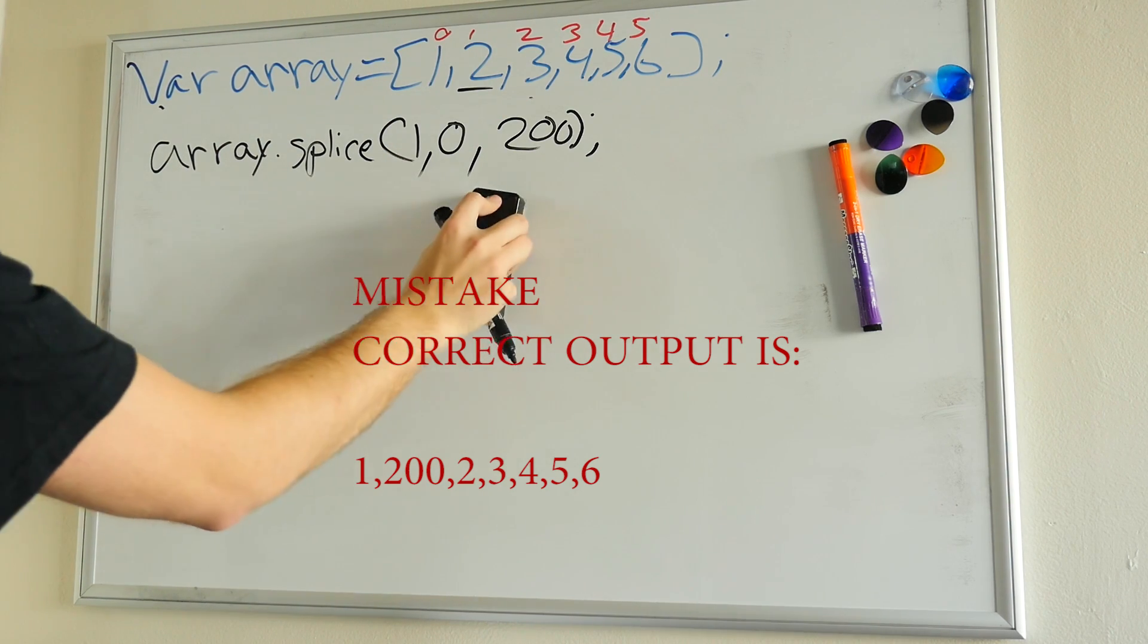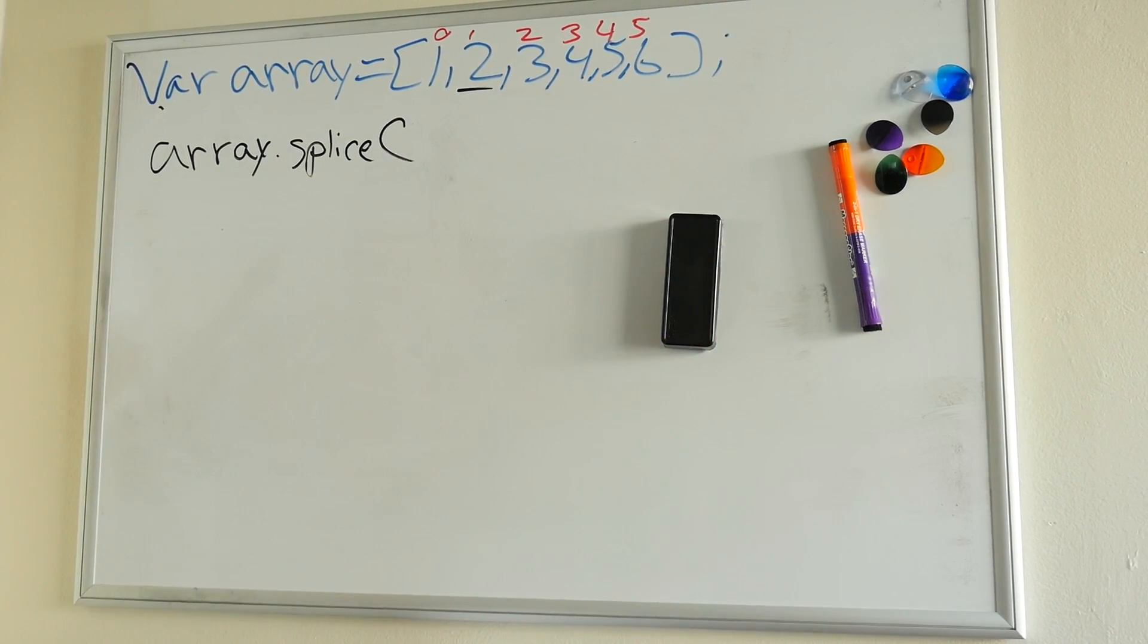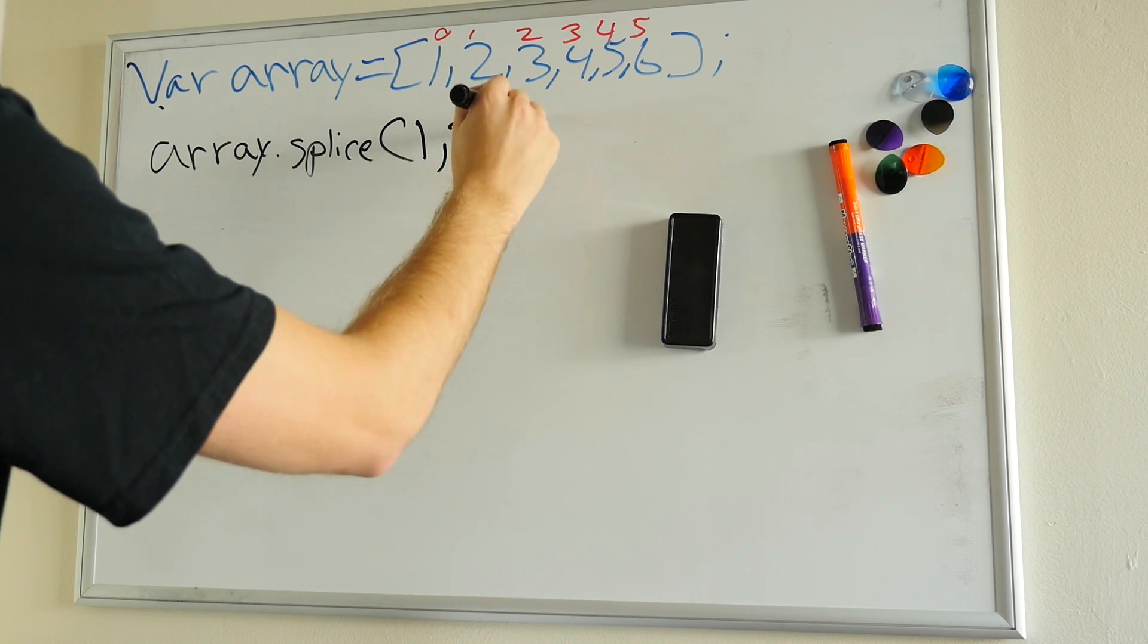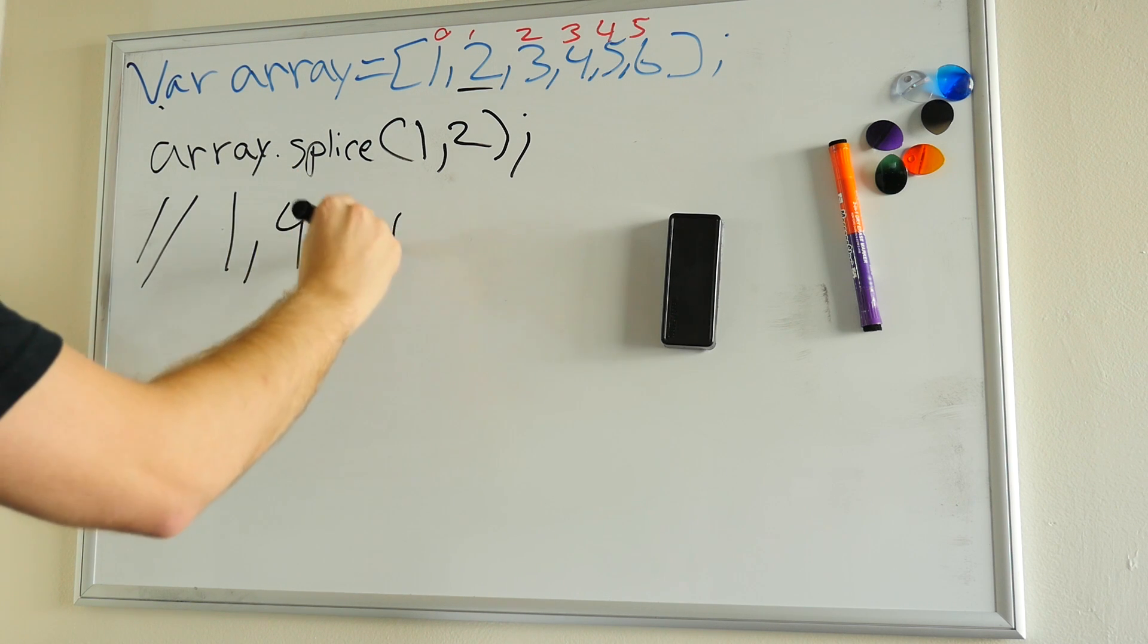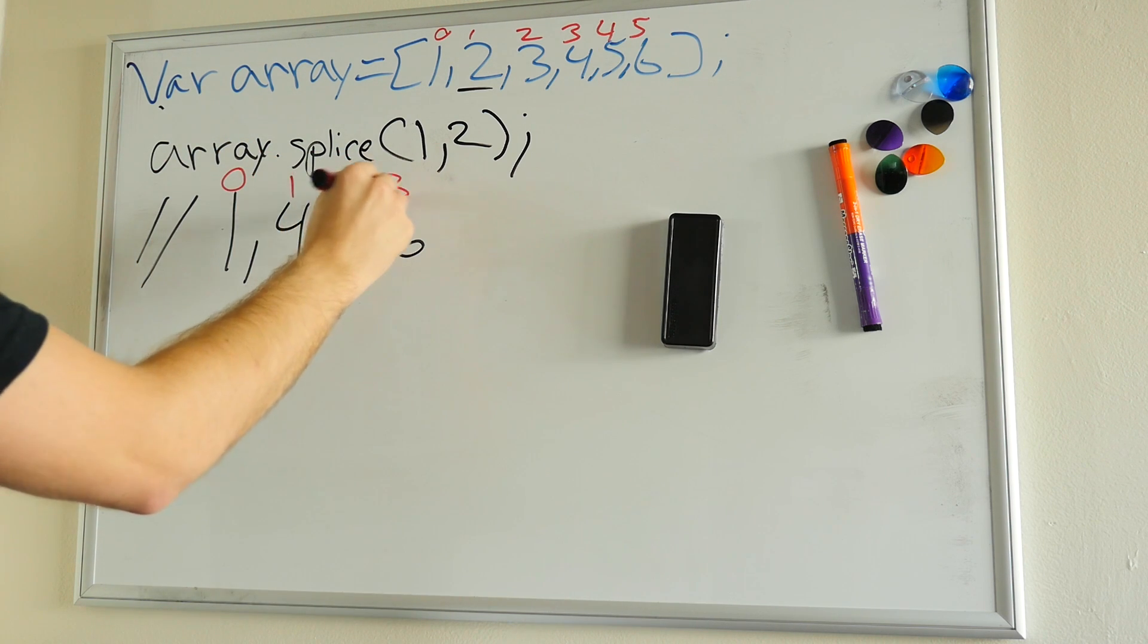So let's actually say that we want to go ahead and delete that number. It would be as easy as just doing, we'll delete two numbers in this case. So we'll delete one and two, but we're not going to replace anything as well. So now our array would have the numbers 1, 4, 5, and 6. And their respective indices would be 0, 1, 2, and 3.